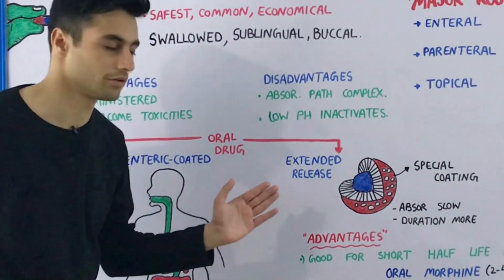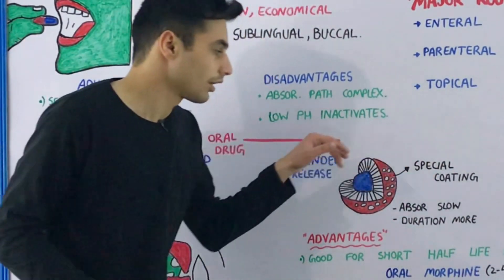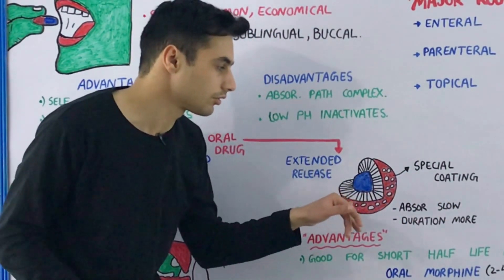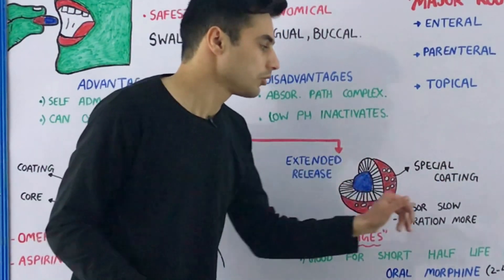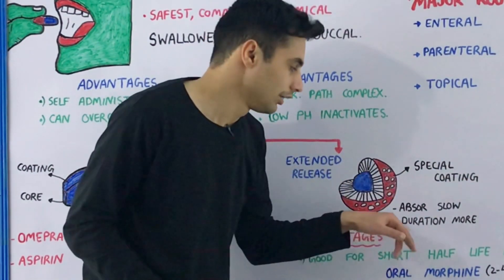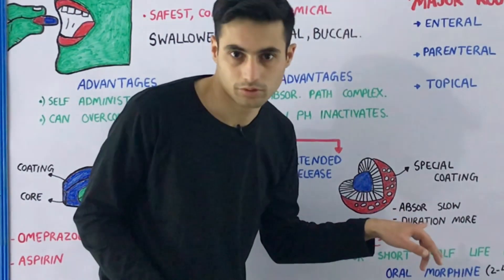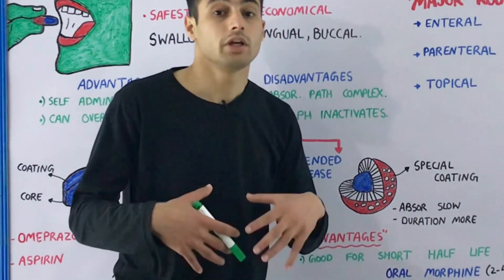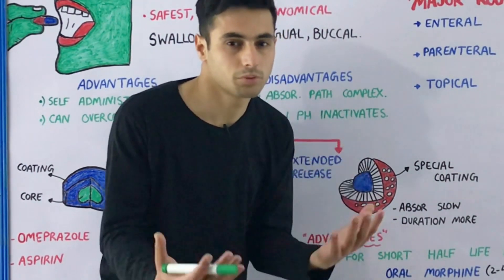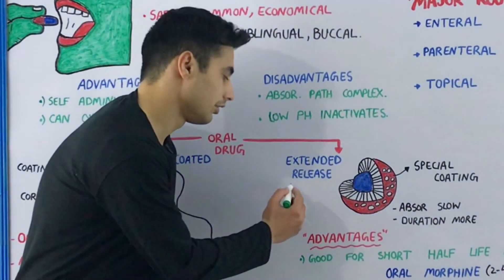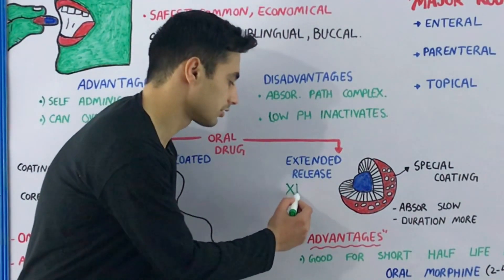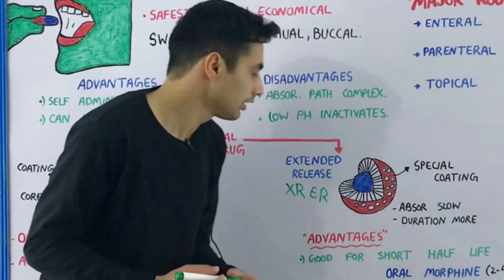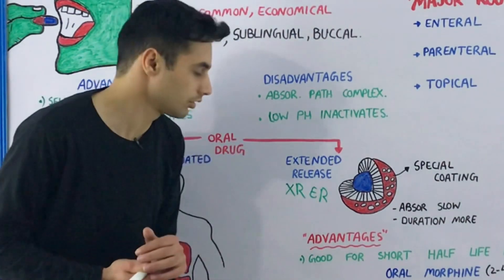Now have a look at the extended release medicines. They also consist of a special coating protecting the drug at the center. One very important thing about this special coating is that it controls the release of absorption — the absorption is very slow, which is why the duration or effect of this medication is prolonged. The extended release is shown by the symbol XR or ER.